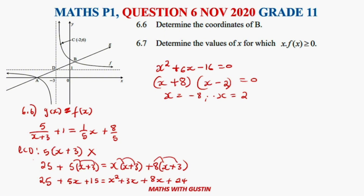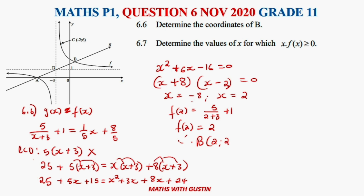To find the y-coordinate of B, substitute x = 2 into f(x): f(2) = 5 / (2 + 3) + 1 = 5/5 + 1 = 1 + 1 = 2. Therefore the coordinates of B are (2, 2).